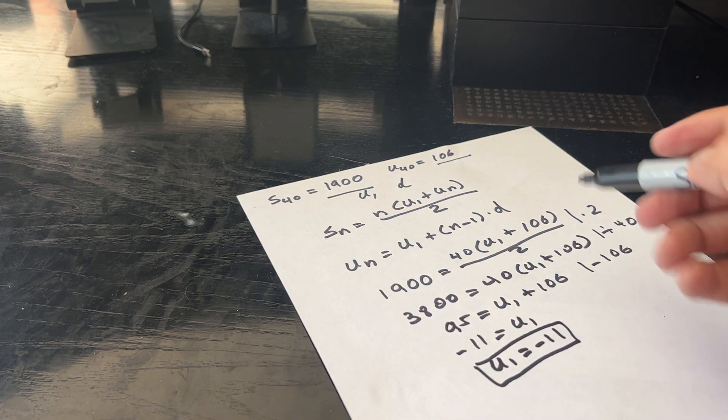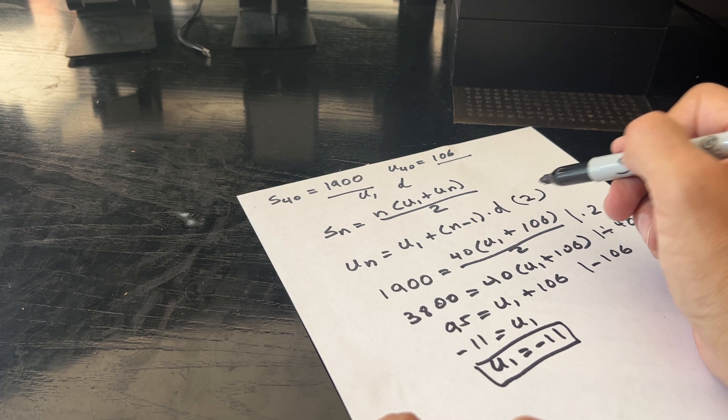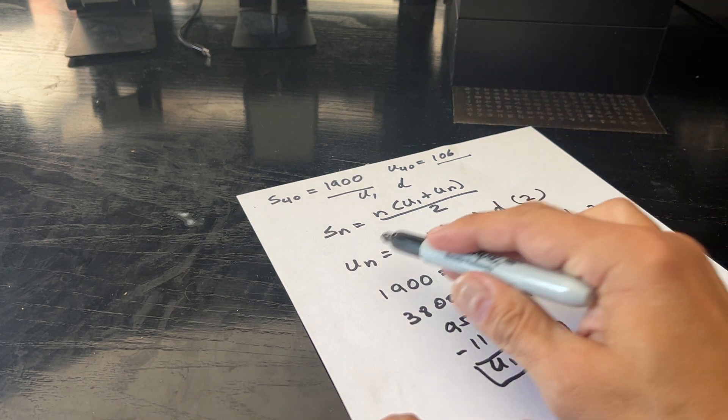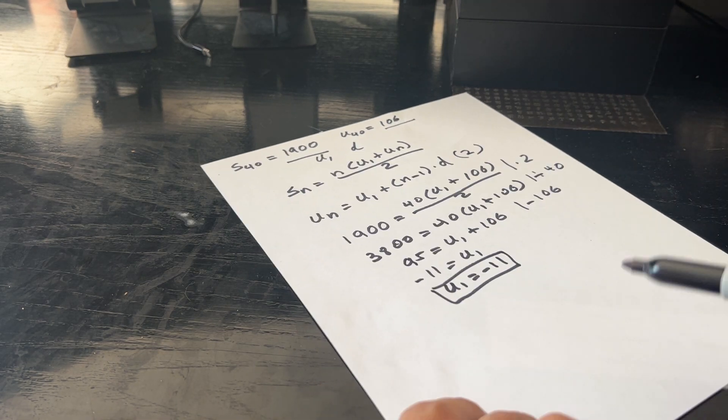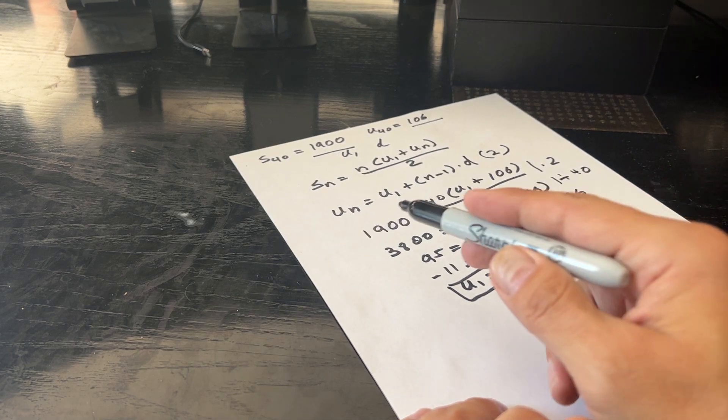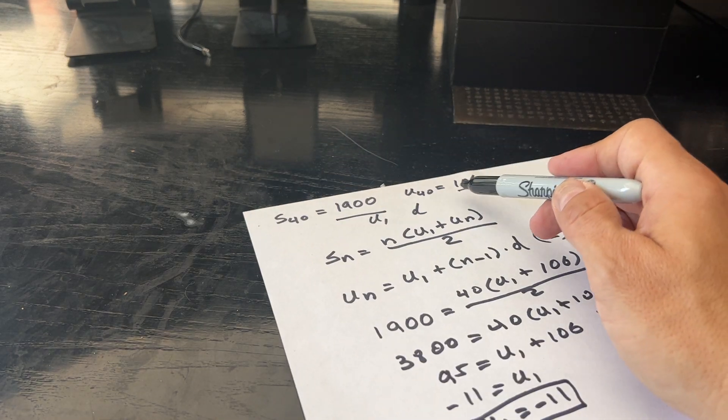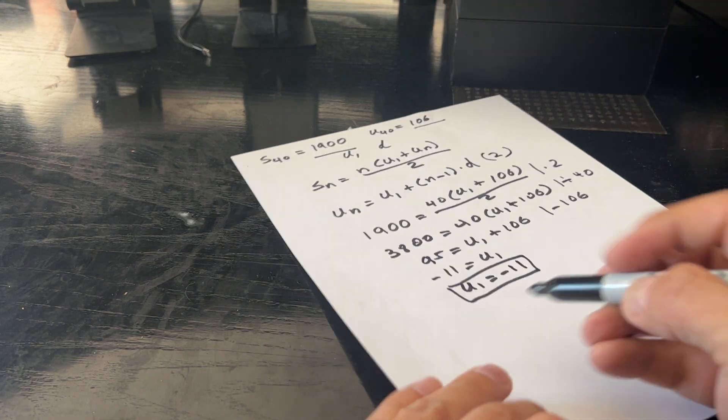Once we have U1, we can plug it into this second equation so that we can solve for D, which is the other thing we're looking for. So now we have Un, which is the value they gave us in the problem, U40 is 106.